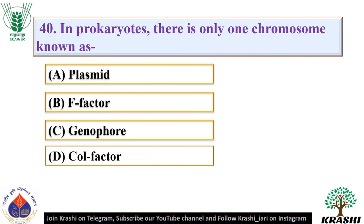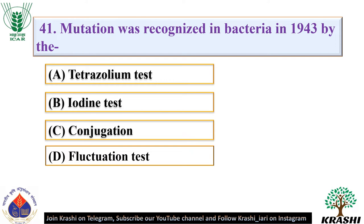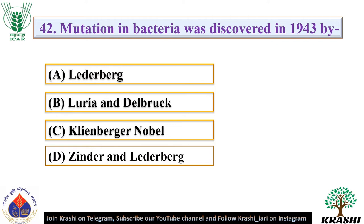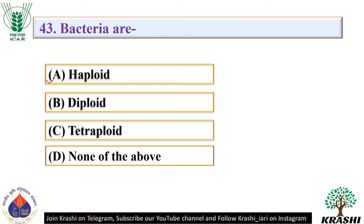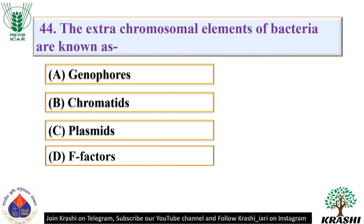Question number 40: In prokaryotes, there is only one chromosome known as — it is known as genophore. Question number 41: Mutation was recognized in bacteria in 1943 by the — it was recognized by the fluctuation test. Question number 42: Mutation in bacteria was discovered in 1943 by. The correct answer is option B — Luria and Delbruck. Question number 43: Bacteria are — they are haploid organisms. Question number 44: The extra chromosomal elements of bacteria are known as — they are known as plasmids. Genes carried in plasmids provide antibiotic resistance.